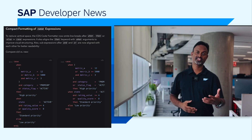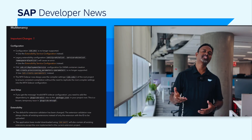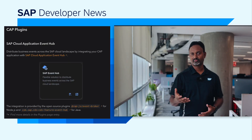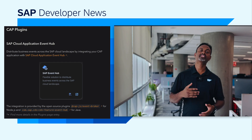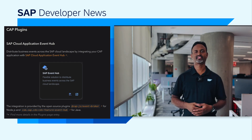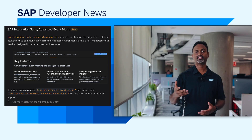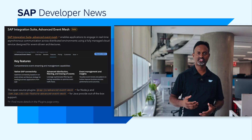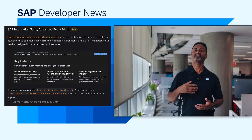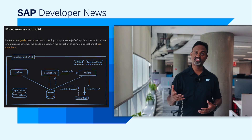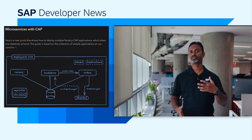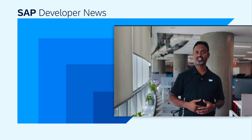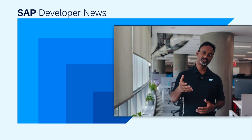For multi-tenancy, important changes include changes in configuration, Java setup, and extensibility. Updates on CAP plugins include the SAP Cloud Application Event Hub plugin that helps distribute business events across the SAP Cloud landscape, and the SAP Integration Suite Advanced Events MESS plugin that enables applications to engage in real-time asynchronous communication across distributed environments. Finally, there is a guide for microservices with CAP that shows how to deploy multiple Node.js applications that share one database schema. Please visit the May CAP release page to find more details — links will be included in the description.